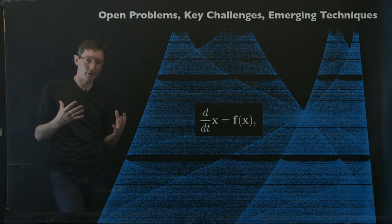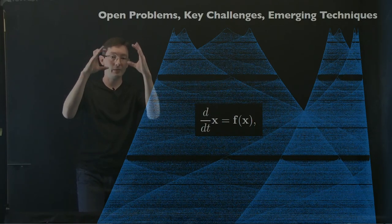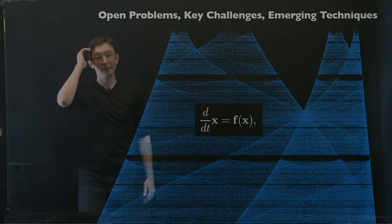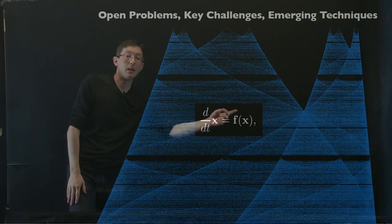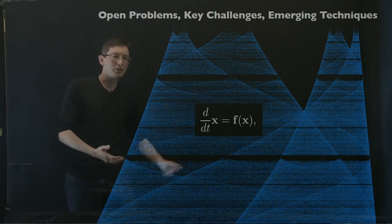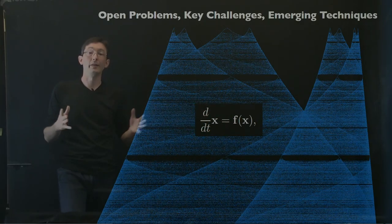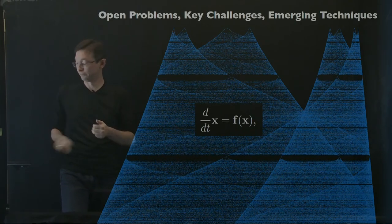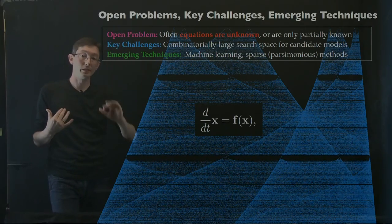I want to start by framing some of the key challenges and open problems in data-driven dynamical systems as I see them. This will frame some of the progress and some of the things we've chosen to work on with Koopman operator theory. We have a dynamical system x dot equals f of x, where x is the state — the minimal set of variables needed to describe the evolution of the system in time. F is a vector field that tells you how the system changes at a given state. The fact that these are nonlinear is really the central challenge in all of this.